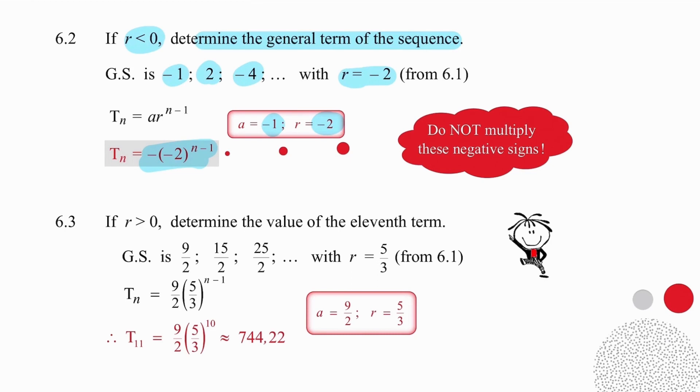In question 6.3, we are using this time a positive ratio result, and we are determining the value of the 11th term. So we're going to use the a value of this particular sequence, which is 9 over 2. We're going to use the ratio of 5 over 3, and we know that the index that we work with will always be 1 less than the position of the term that we are working with. Substitute all of that into your calculator, and your answer will be 744.22.